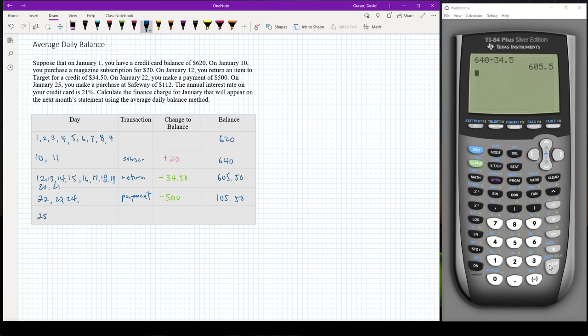So the next one goes on the 25th, and that's a purchase at Safeway, and it's a purchase of $112. So that's going to add to my balance $112. So my 105.50, when I add $112, that gives me a new balance of $217.50. And I know I'm going to have that balance through the end of the month because that's my last transaction, so 26th, 27th, the 28th, the 29th, the 30th, and the 31st.